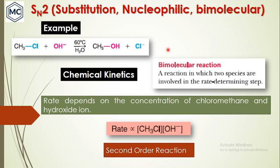Substitution nucleophilic bimolecular reaction — an example is chloromethane in the presence of a strong base at 60 degrees to give an alkyl product. Chemical kinetics studies reveal that this is a bimolecular reaction. Bimolecular means two species are involved in the rate-determining step. The rate of reaction depends on two molecules: substrate and nucleophile. So the rate depends on the concentration of chloromethane and hydroxide ion — that is called bimolecular.